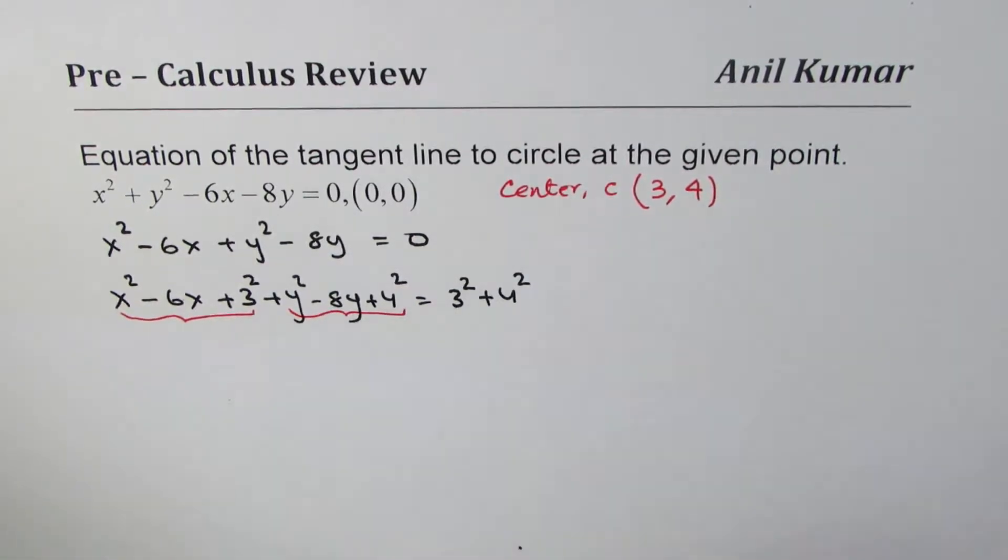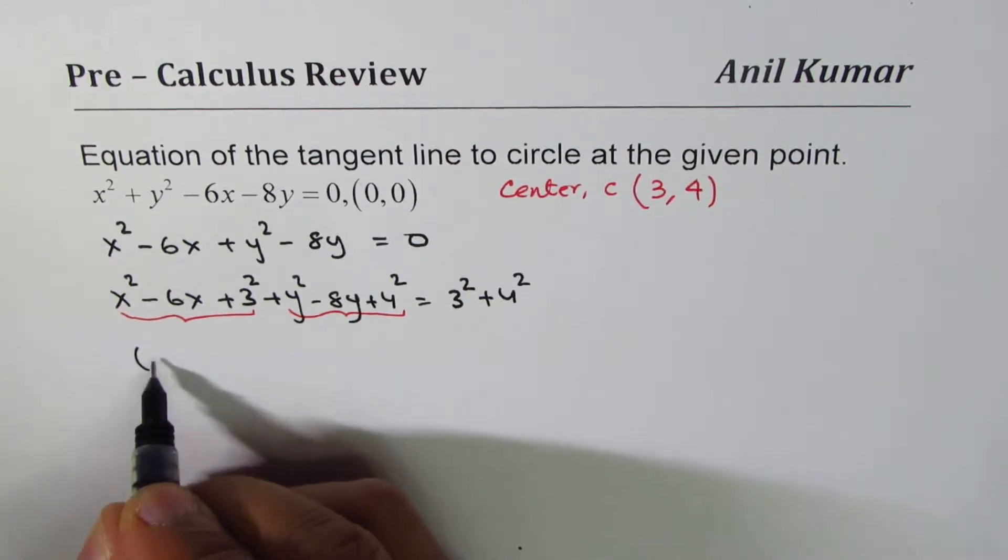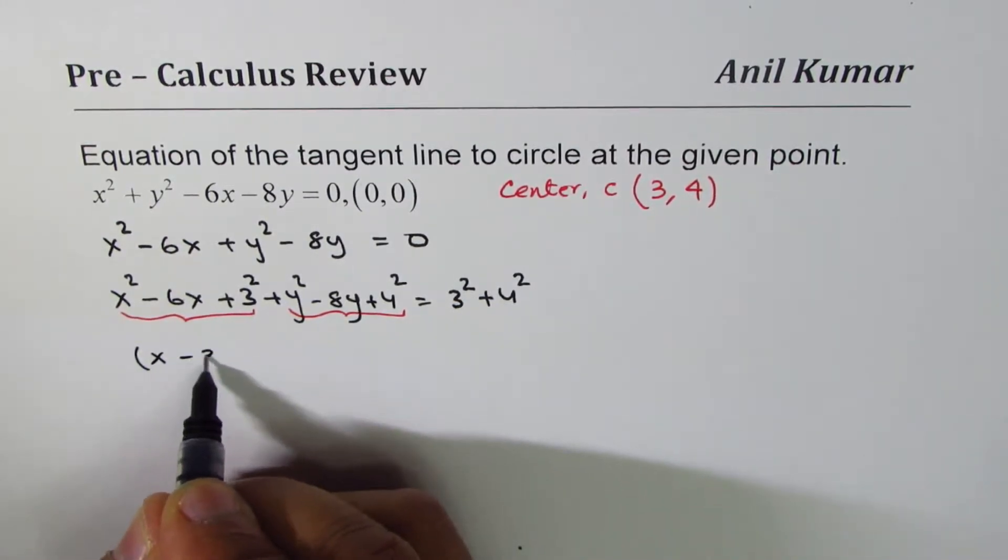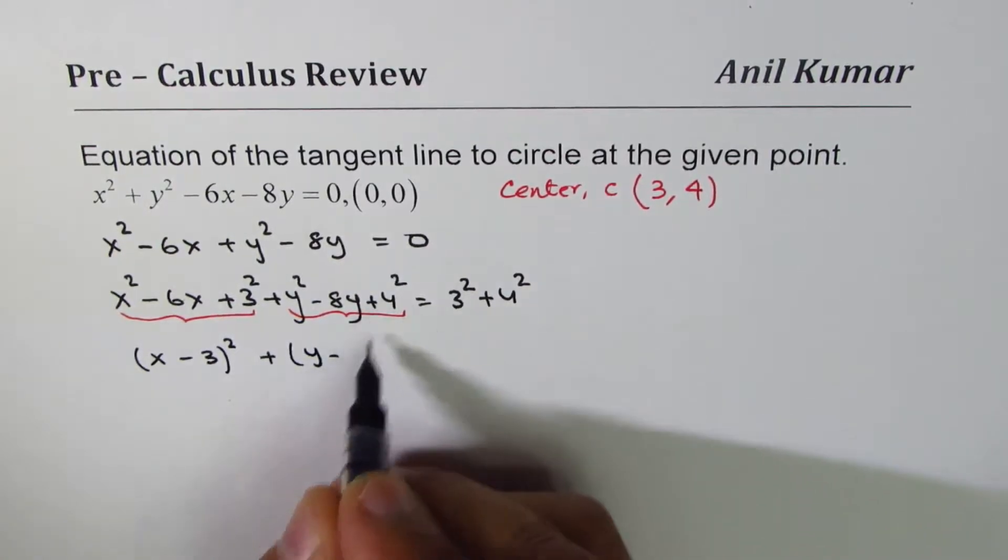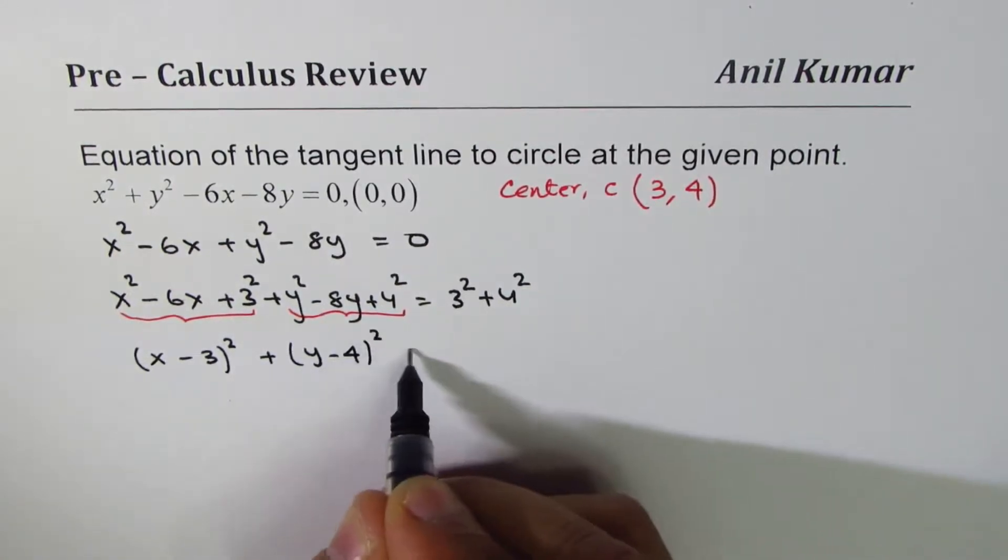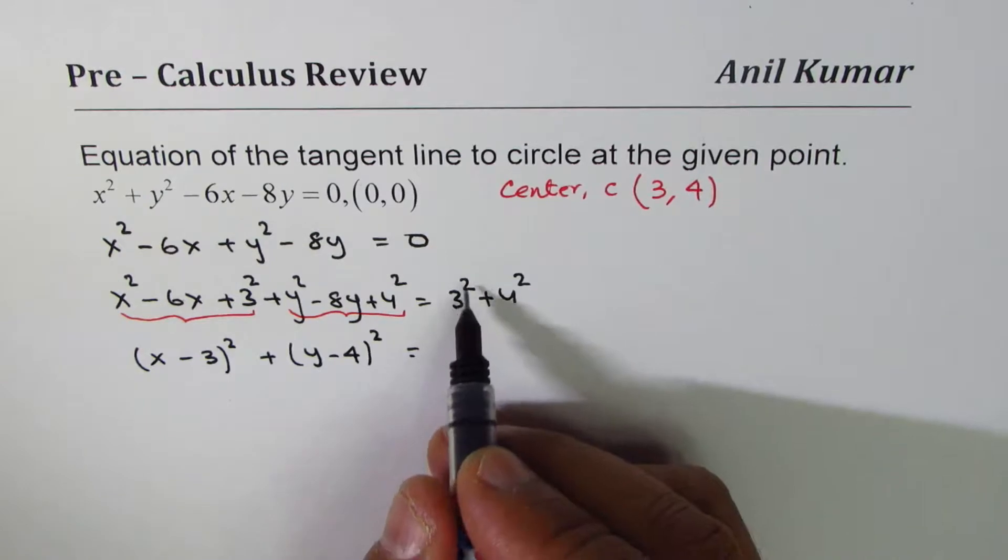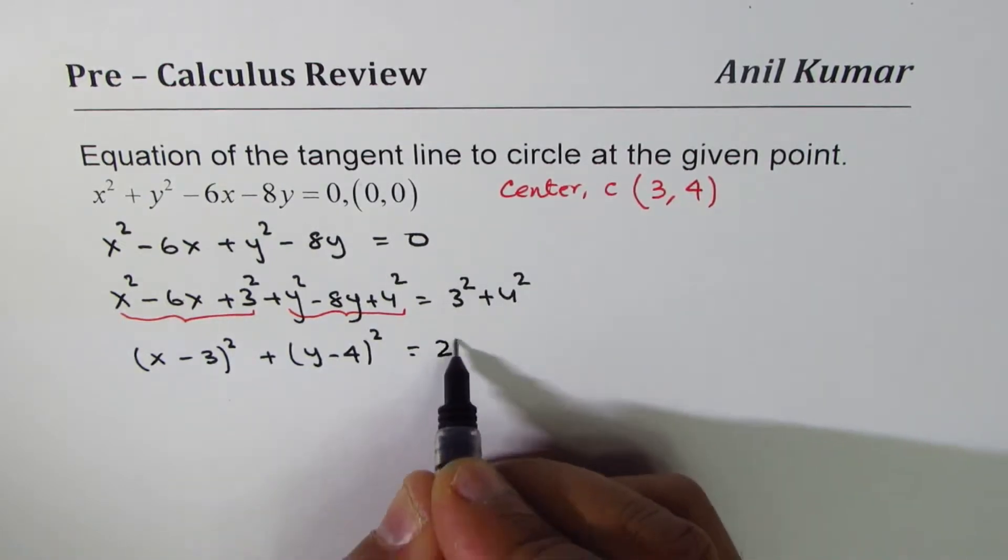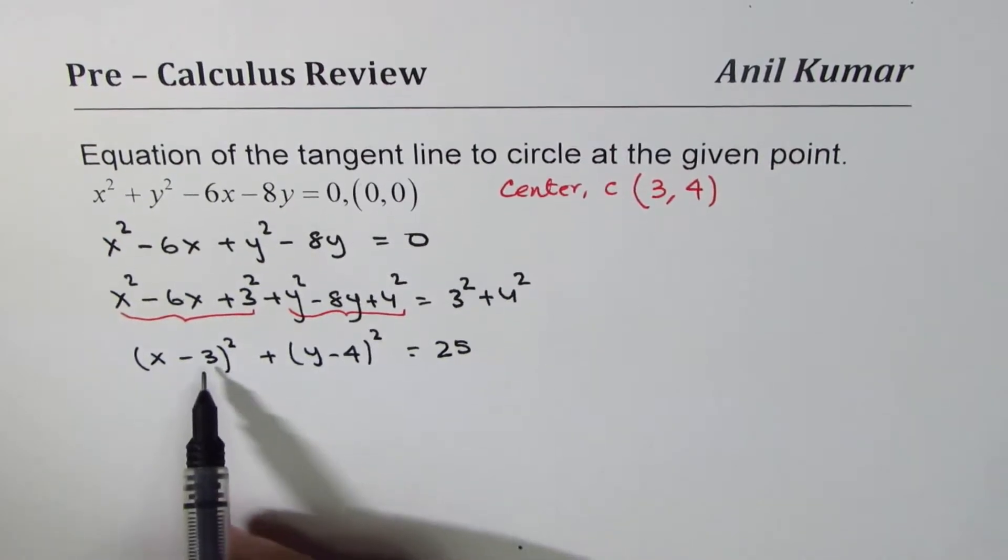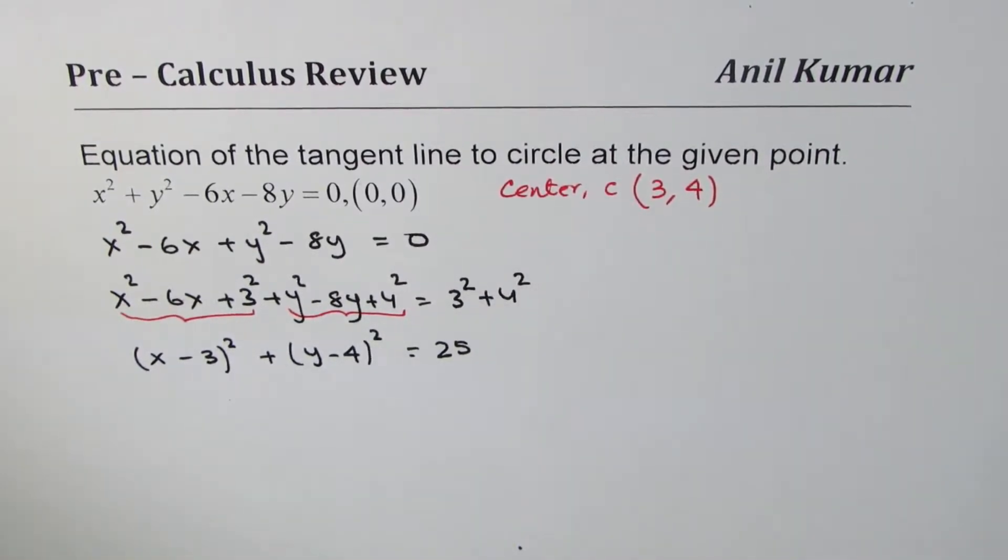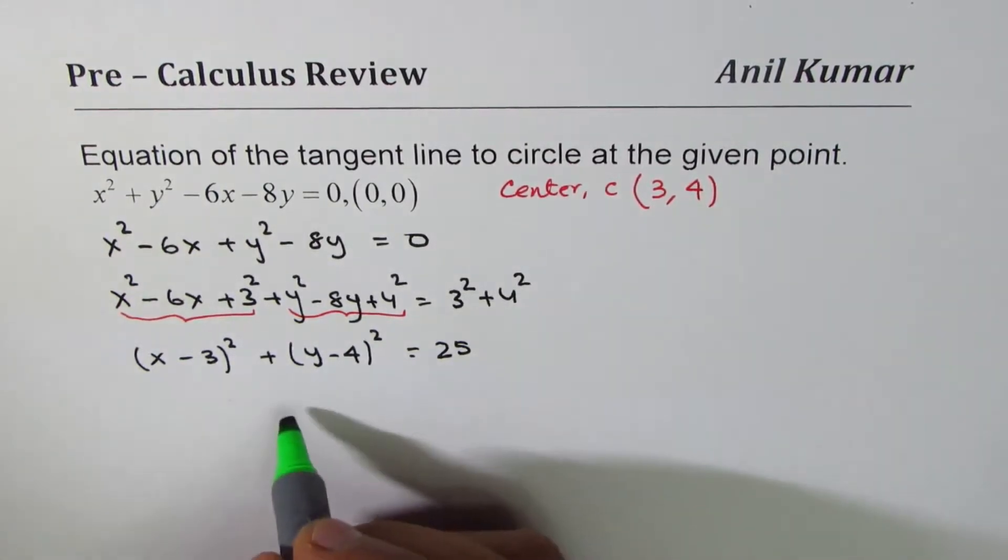Now as you can see these three terms form a perfect square and that also forms a perfect square. So we can write this as (x - 3)² + (y - 4)² = 9 + 16 = 25 = 5². Radius is 5. So we get the center as (3,4) as we had predicted.